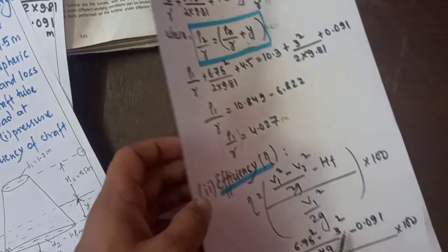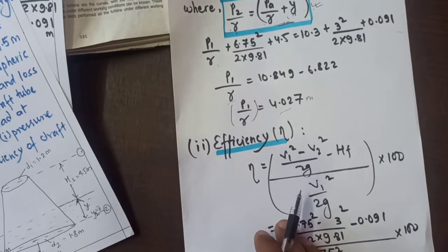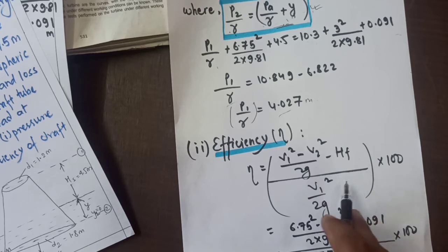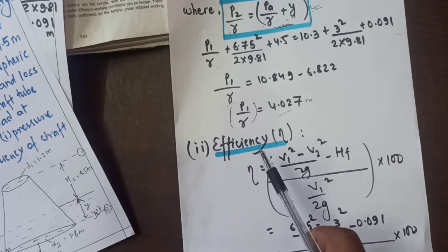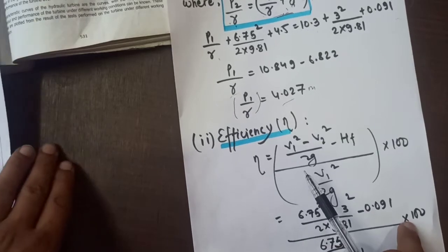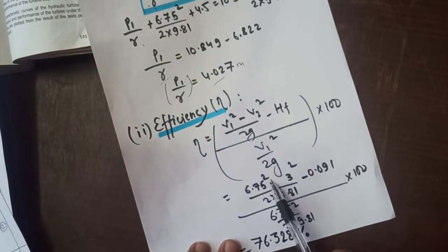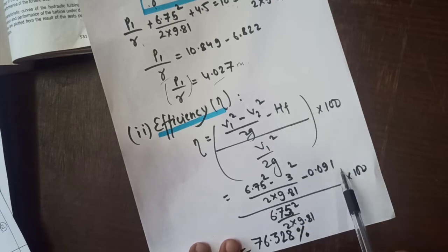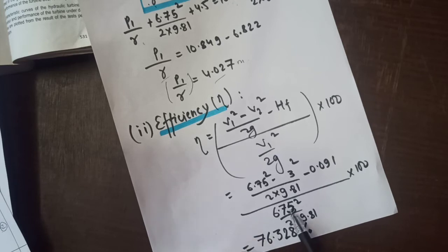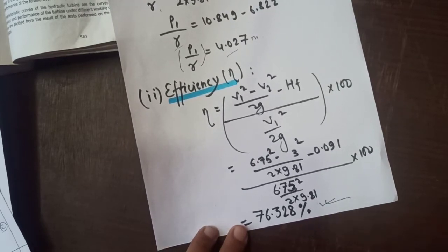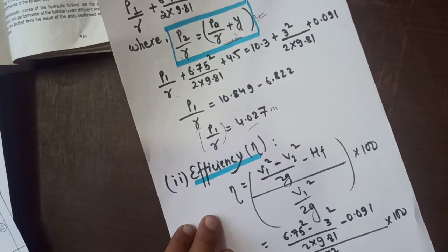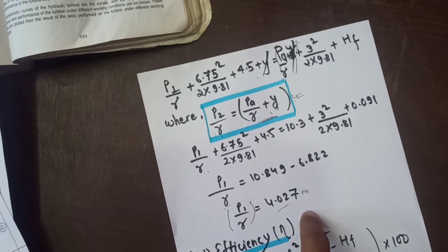Now we need to find efficiency. Efficiency equals V1 square minus V2 square by 2g minus HF upon V1 square by 2g. This is change in kinetic energy upon original kinetic energy. Substituting values, efficiency equals V1 square minus V2 square by 2g minus HF upon V1 square by 2g. After solving, efficiency is 76.32 percent.